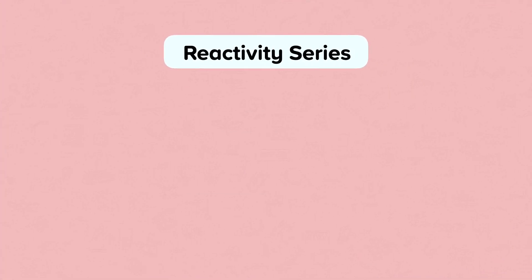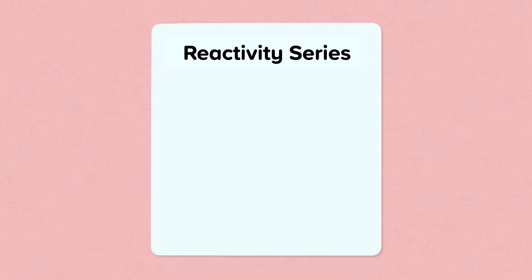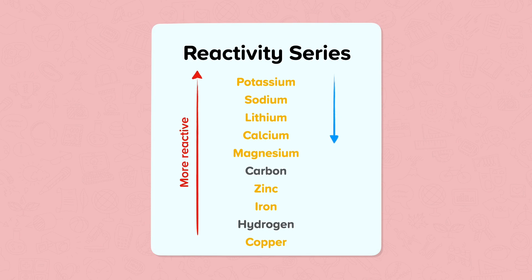Metals can be arranged in order of their reactivity, and this is called the reactivity series. The red arrow on the left shows the metals becoming more reactive, whereas the blue arrow shows them becoming less reactive.